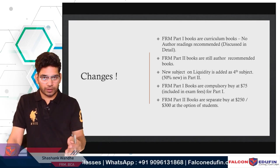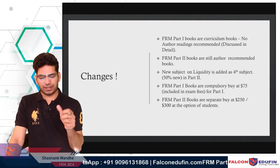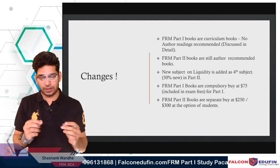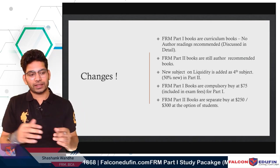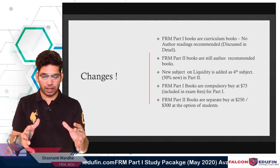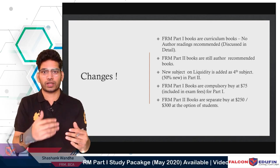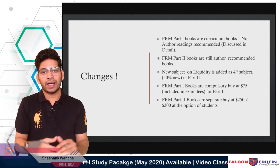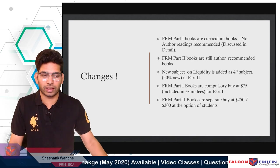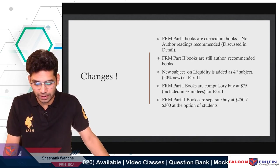In FRM Part 2, a new fourth subject is introduced: Liquidity. This subject is 50% new and 50% existing content. There were previously a few liquidity chapters spread across all five subjects; now those chapters are gathered together as Subject 4, with around 10 to 12 additional chapters adding approximately 50% extra syllabus.